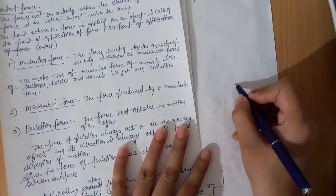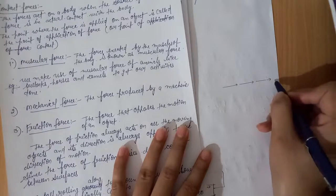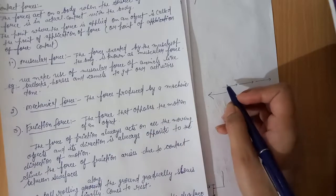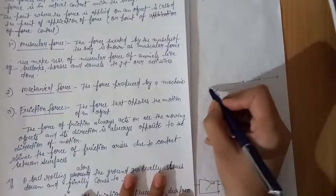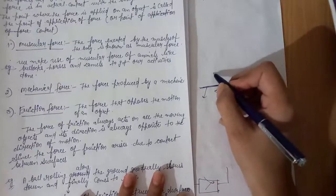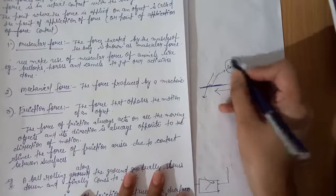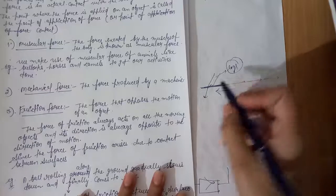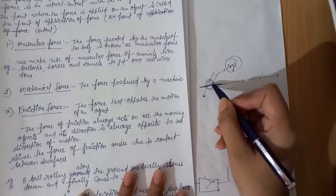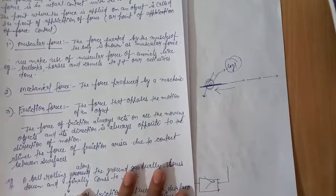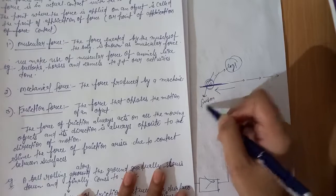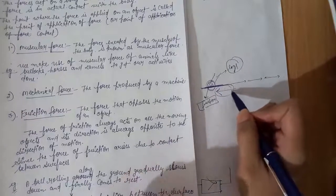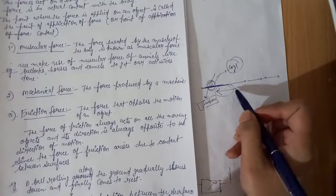As we walk on the surface of the road in this direction, the friction force acts on us in the opposite direction. Friction force always acts between surfaces — between the surface of the road and our legs. The contact between the person's legs and the surface of the road creates friction force, which opposes the person from moving in that direction. Friction force always acts in the opposite direction of the moving object and opposes the motion of the object.